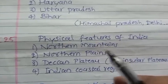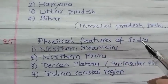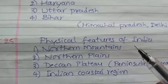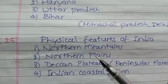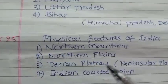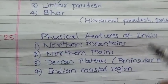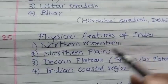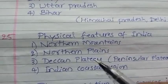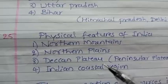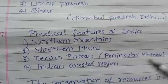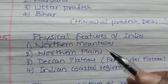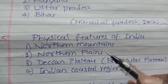The 25th question on physical features of India: The main physical features are the Northern Mountains, the Northern Plains, the Deccan Plateau (or Peninsular Plateau), and the Indian Coastal Region. These are the main physical features of India.